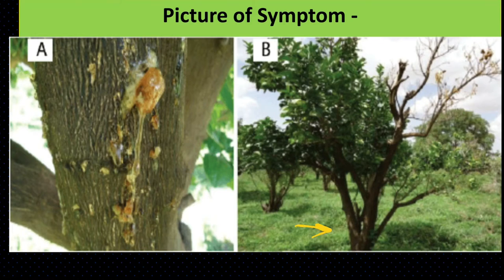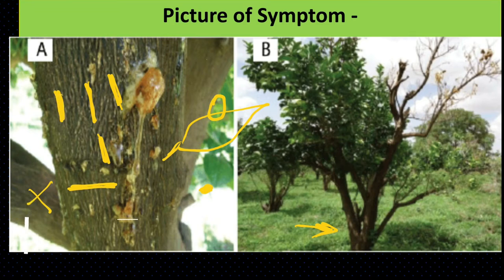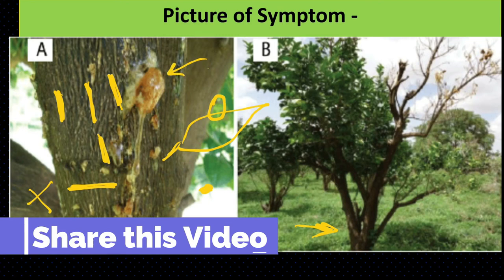यहाँ पर पहले water-soaked spots बनते हैं — जैसे कोई पत्ती होती है और उसे उंगलियों से दबाते हैं तो वह watery हो जाता है, वैसे type का symptom है। बाद में इसका size बढ़ता है और bark में cracking हो जाती है, जो lengthwise vertical होती है। यह है gum secretion।